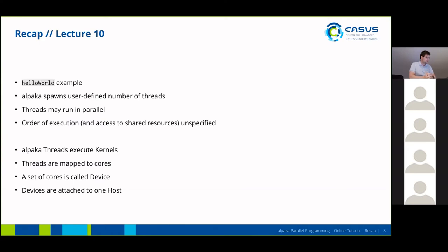On Tuesday we had a look at the hello world example and we've seen how we can spawn a user-defined number of threads and that these threads may run in parallel. However, the order of execution and also the access to shared resources is unspecified. Alpaca threads execute the kernels and the threads are mapped to cores. A set of cores is called a device, and multiple devices are attached to exactly one host.